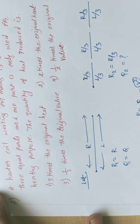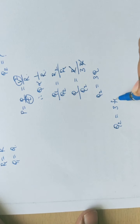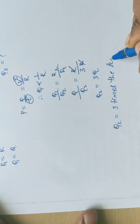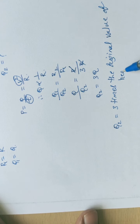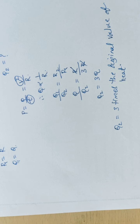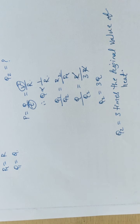Substituting: Q1 equals Q, R2 equals R by 3, R1 equals R. After cancellation, Q2 equals 3Q. So if the wire is cut into three equal parts and only one part is used, the heat generated is three times the original heat, while maintaining the same mains voltage.